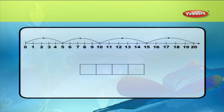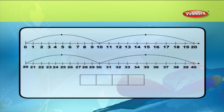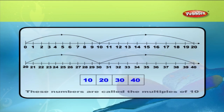Skip counting by 5's. In the given number line, starting from 0, when you jump by 5's, we reach the numbers 5, 10, 15, and 20. These numbers are called the multiples of 5. Skip counting by 10's. In the given line, when you jump and skip count by 10's, we arrive at the following numbers: 10, 20, 30, and 40. These numbers are called the multiples of 10.